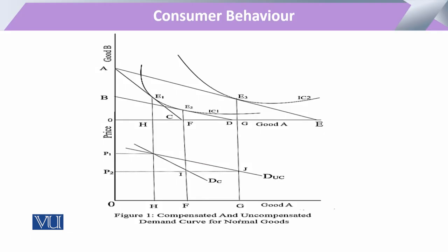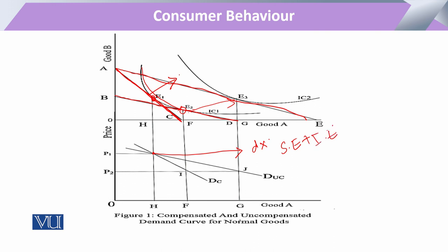Through compensation, we have accounted for the income effect in the Hicksian demand function. In another diagram — looking at compensated versus uncompensated demand in terms of price changes — we show one original budget line, then after a price change its shift to the right, and then the compensation on the same utility level. The movement from e1 to e2 represents the compensated Hicksian movement. The shift from e1 to e3 is basically the Marshallian curve because it includes substitution effect plus income effect. Since the Hicksian demand deals only with the substitution effect, its movement is from e1 to e2 — this is our compensated or Hicksian demand curve.